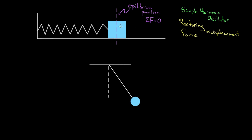What that means is, if I pull this mass to the right, there'll be a restoring force. But if it's proportional to the displacement, pulling the mass back twice as much gives twice the restoring force, and pulling it back three times as much gives three times the restoring force. Same for the pendulum — pulling it back with two times the angle gives two times the restoring force. If that's the case, you've got what we call a simple harmonic oscillator.